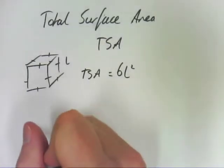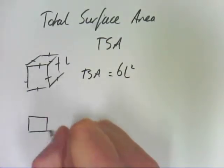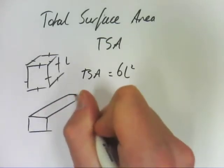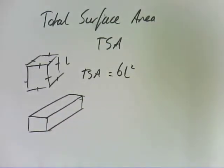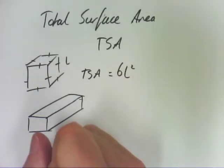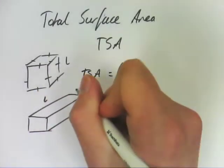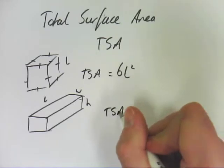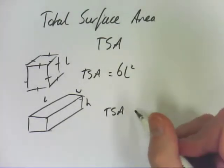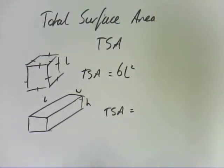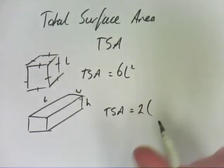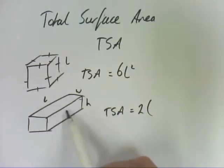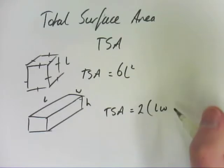If you have a rectangular prism, where you have length, width, and height, the formula is a little bit more involved, but it's still very easy. You have two of each sized shape, so you have twice the length times the width. You have the top of the box here and the bottom of the box underneath there, length times width.